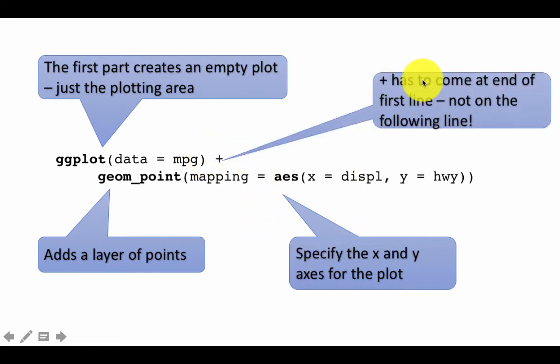Okay, so that is why the plus has to come at the end of the first line, not on the following line. This is very important. It's a common mistake. And try the following. What happens if you just run ggplot data equals mpg?